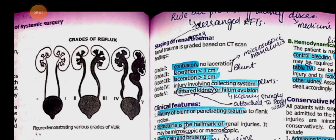In stage 3, the laceration is larger — more than one centimeter. In stage 4, the laceration involves the renal collecting system — there is injury in the pelvis region. In stage 5, the hilar region is involved and the kidney has been shattered.